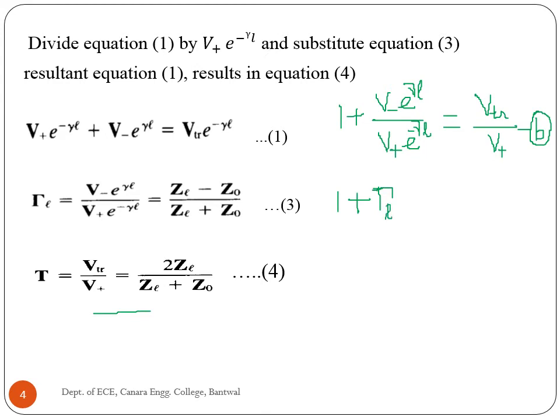That is, V- e to the power gamma L divided by V+ e to the power minus gamma L, which equals V_TR divided by V+. V_TR divided by V+ is the transmission coefficient, which is the ratio of the transmitted voltage to the incident voltage. Therefore, the transmission coefficient is the amplitude of the forward wave, which must be the sum of the two waves — the incident and the reflection coefficient waves.